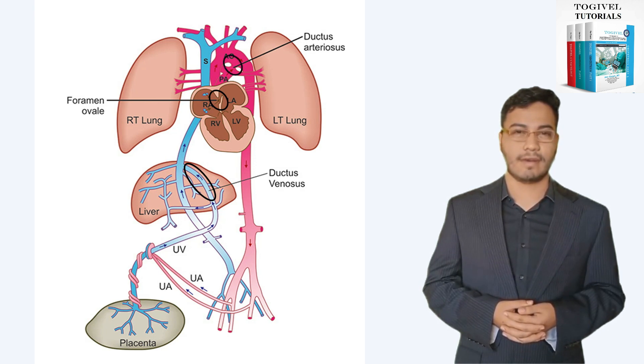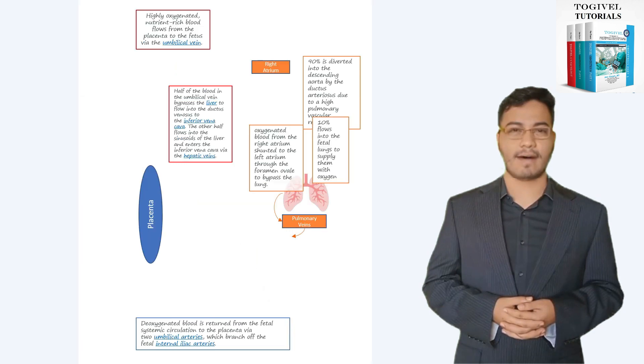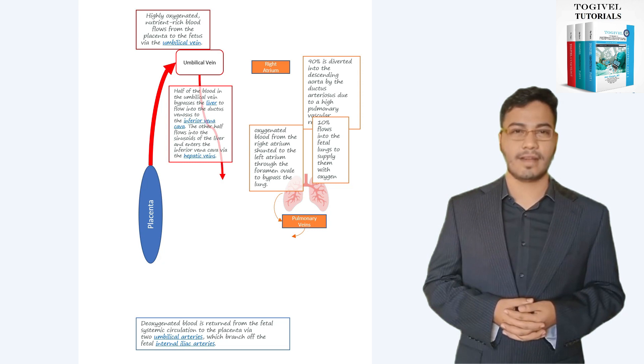Let's now go through the blood flow in the diagram. Oxygen and nutrient materials are delivered from the placenta to the fetus by the single umbilical vein. The umbilical vein then divides into the ductus venosus and the portal sinus.